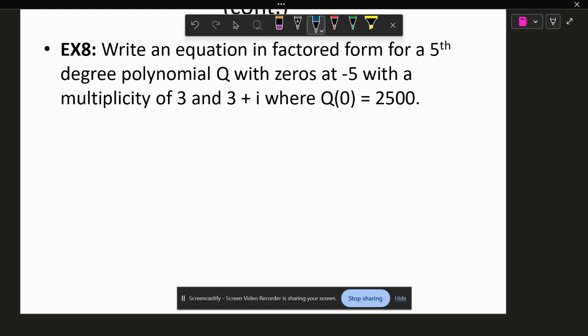So zero at negative five. In order to set this up, remember you're going to have x equals negative five, so x plus five will be your factor and it's got a multiplicity of three, so that means it's going to be cubed.